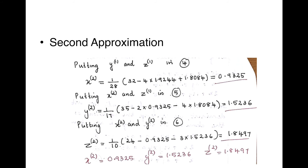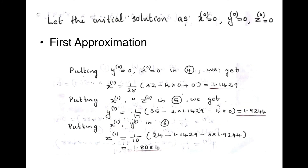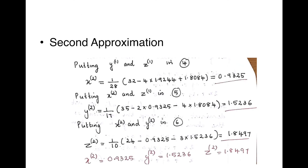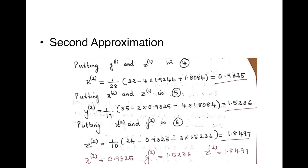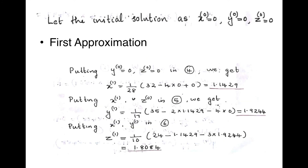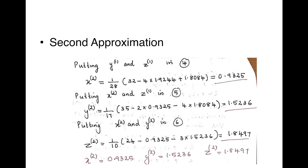Now compare the values from the first and second approximations: x¹ = 1.1429 vs x² = 0.9325 — not equal; y¹ = 1.9244 vs y² = 1.5236 — not equal; z¹ = 1.80 vs z² = 1.84 — only 1 decimal place equal. Therefore, go for the next approximation.